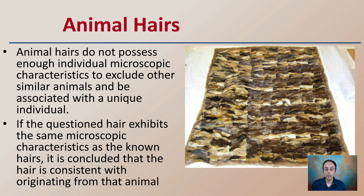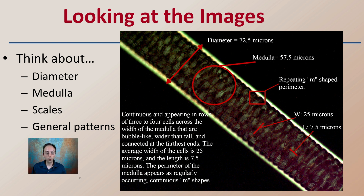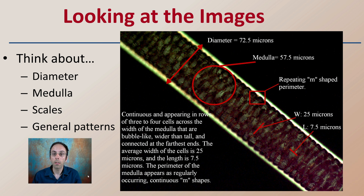If the questioned hair exhibits the same microscopic characteristics as a known hair, it's concluded that the hair is consistent with originating from that particular animal. We could see here we're comparing different pelts of different animal hairs. When looking at the images, we want to be thinking about the diameter, the medulla, the scales, and the general patterns of those hairs.